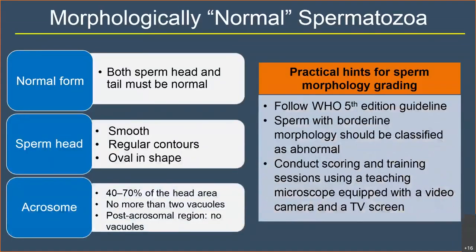To assess a morphologically normal spermatozoon, both the sperm head and tail must be normal. The sperm head is smooth and oval in shape, the acrosome comprises 40 to 70 percent of the head area, no more than two vacuoles are present, and no vacuole is in the post-acrosomal region. Any sperm with borderline form will be classified as abnormal. This can be achieved by doing scoring and training sessions using a teaching microscope equipped with a video camera and TV screen.